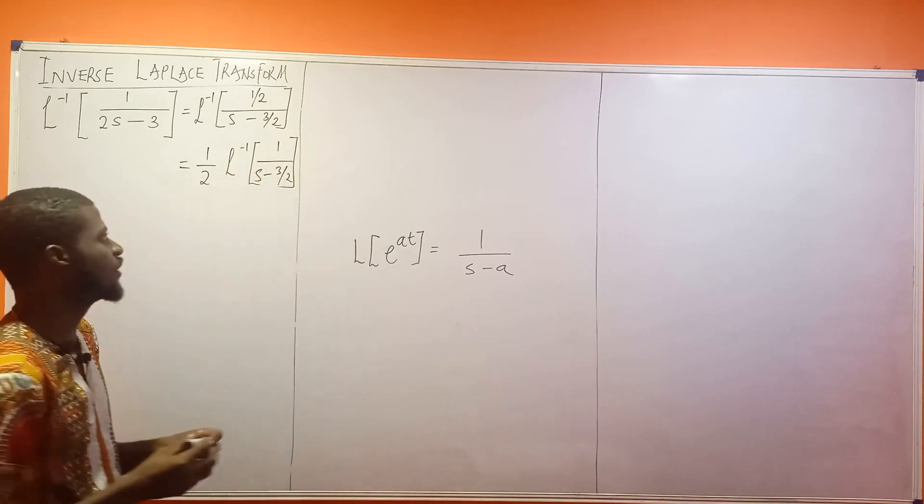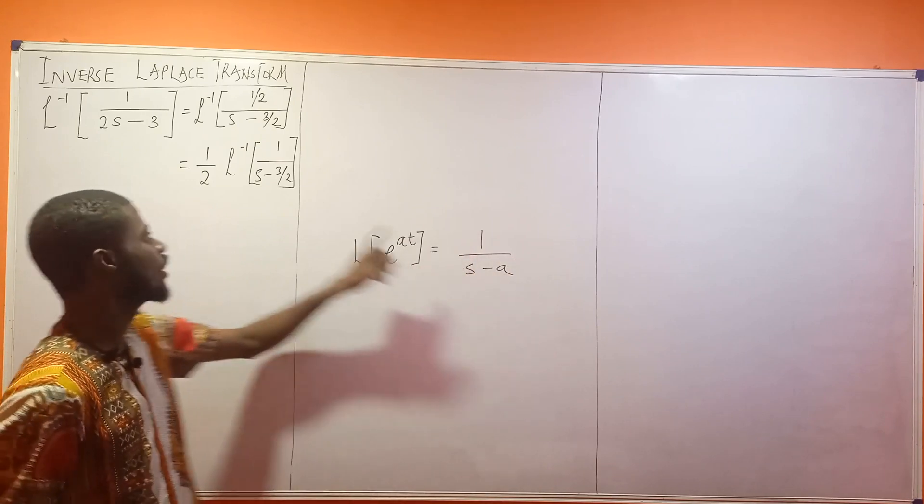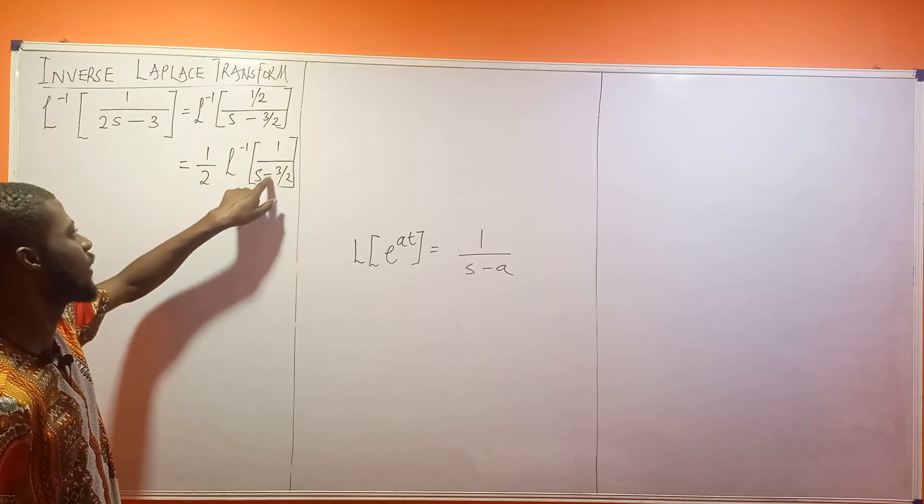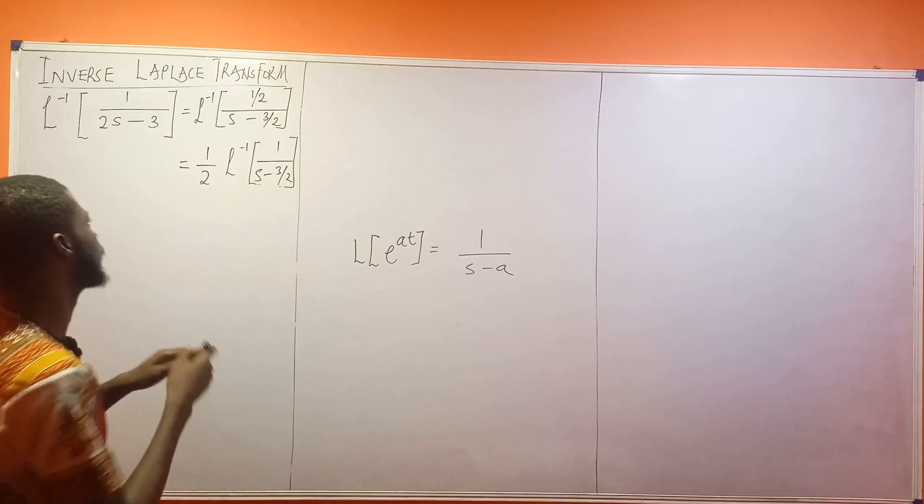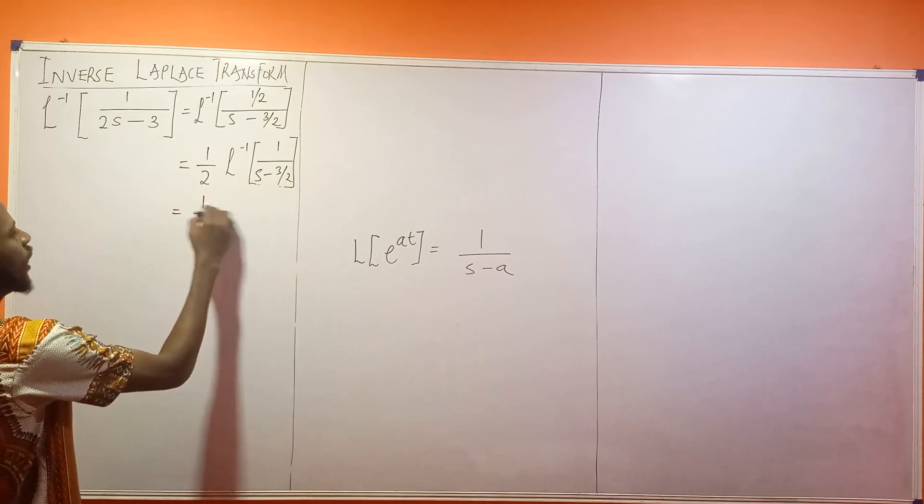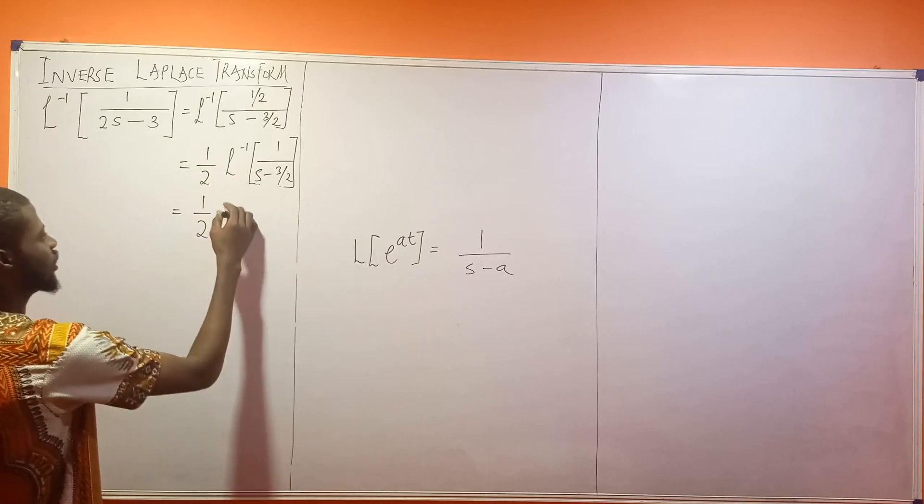What are you saying? We have 1 over s minus a, so this is 1 over s minus 3 over 2. So what do you think here? a is what? 3 over 2. So this will become 1 over 2. What is the inverse of this? To become exponential.